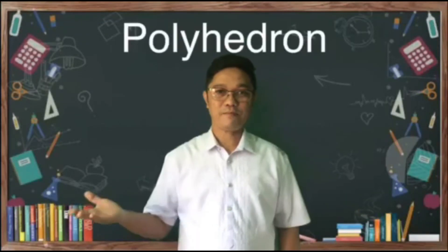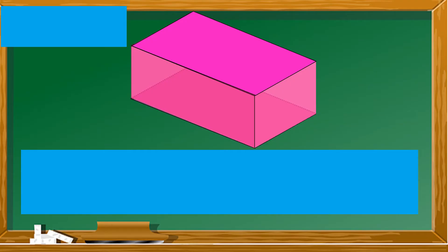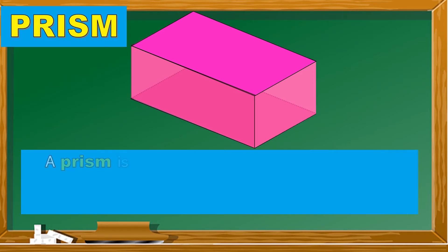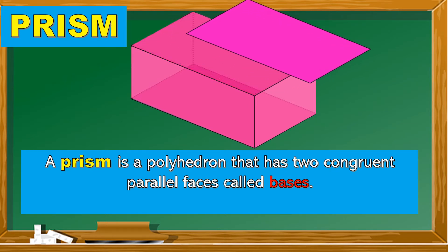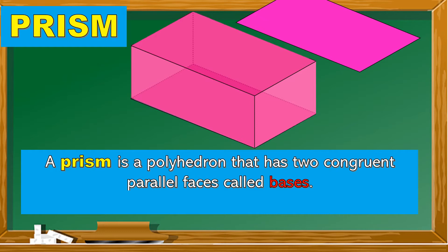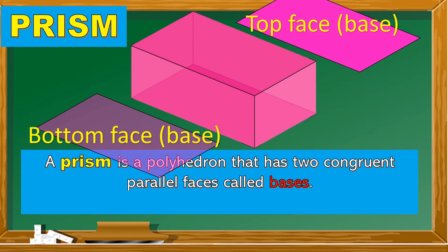We have the prism and the pyramid. A prism is a polyhedron that has two congruent parallel faces called bases. Look at the figure and observe where the two congruent parallel faces are — we have the top face and the bottom face.